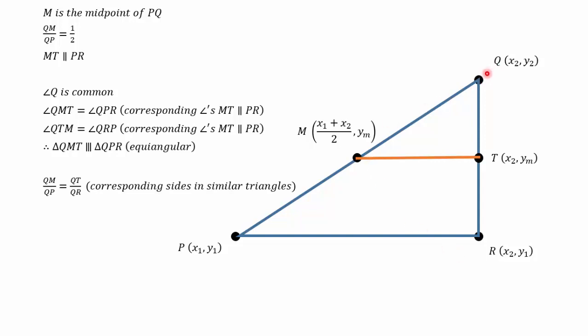That makes QM to QP equal to QT over QR because they are corresponding sides in similar triangles. We've gone small triangle over big triangle should be equal to small triangle over big triangle. So I already know QM over QP. That's equal to a half. QT is equal to y2 minus ym. That's what I've got there as the numerator. And QR is equal to y2 minus y1 which will be the denominator.